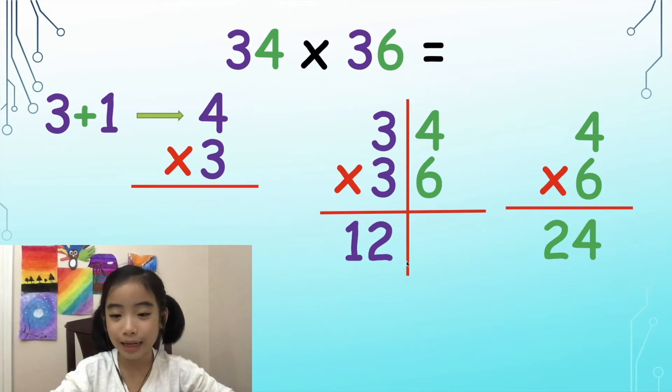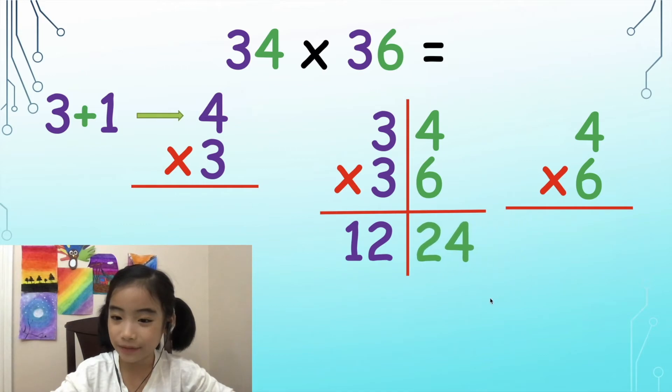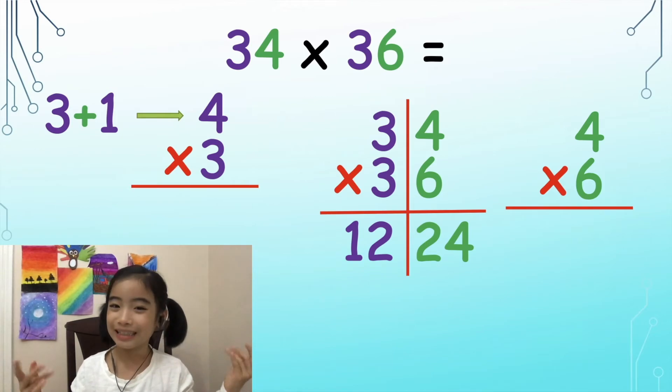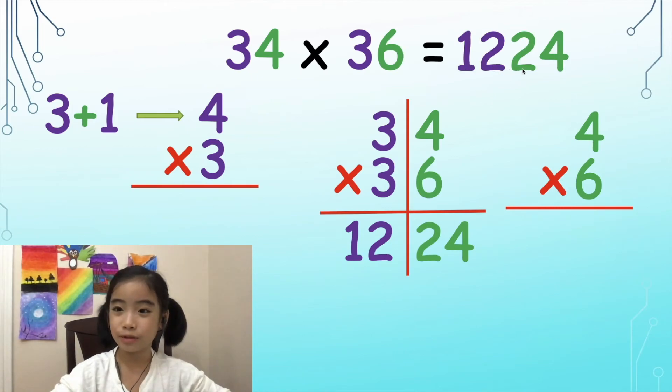We have 12 hundreds and 24 ones. Ta-da! We have 1224. 34 times 36 equals 1224.